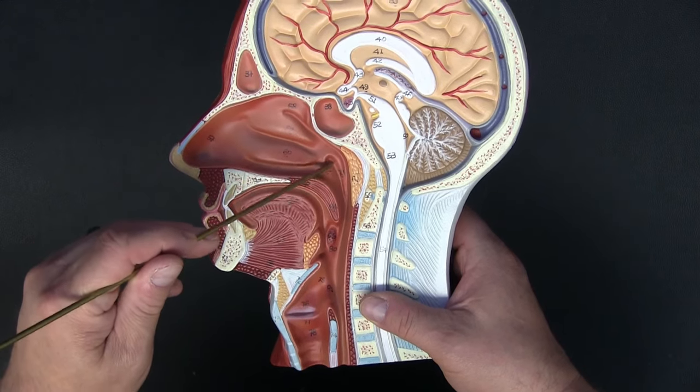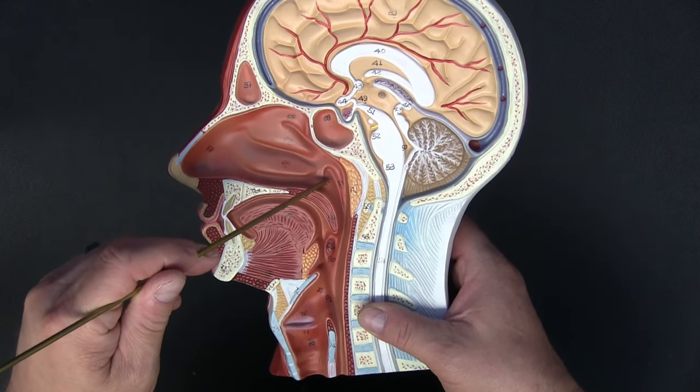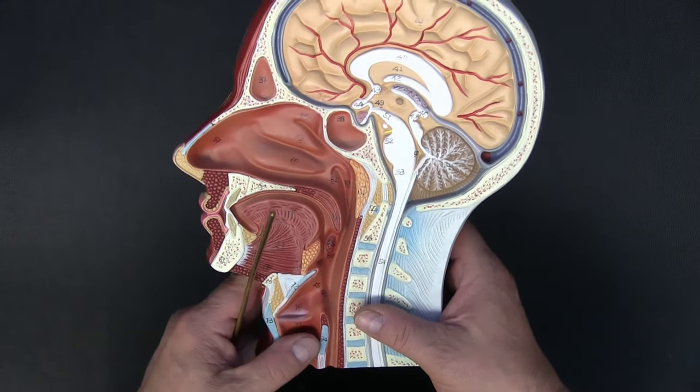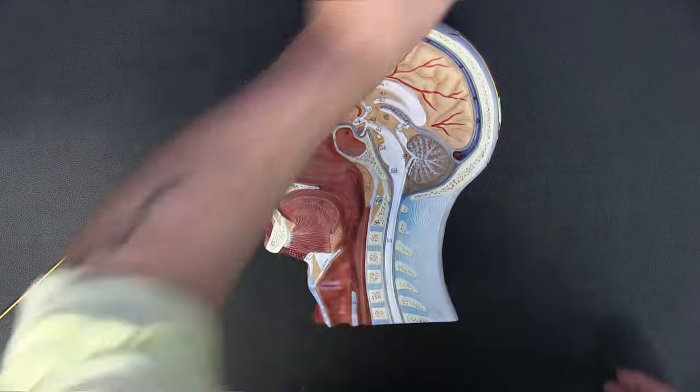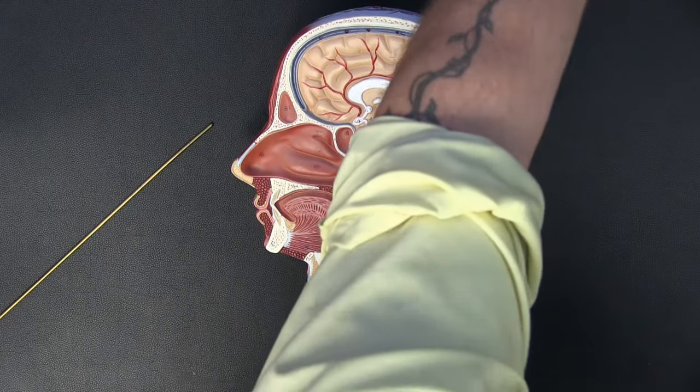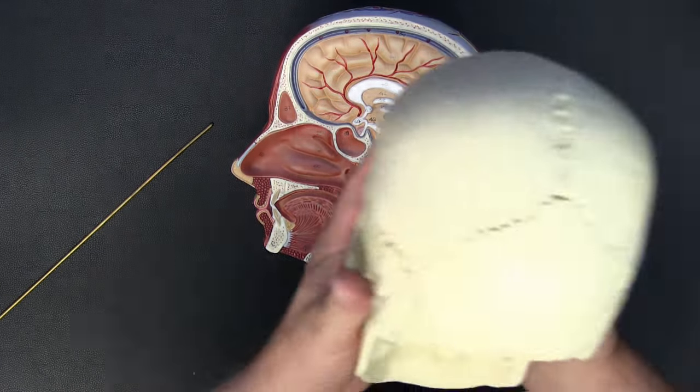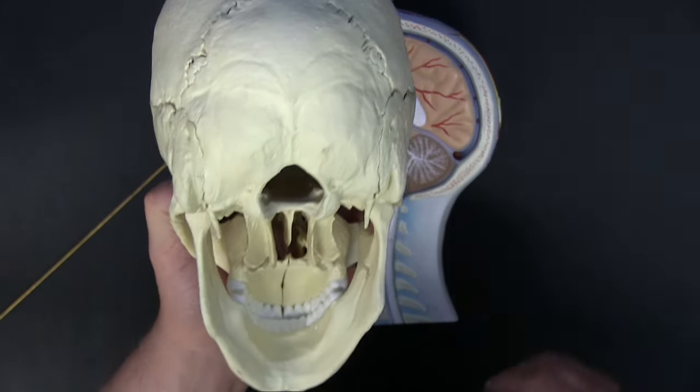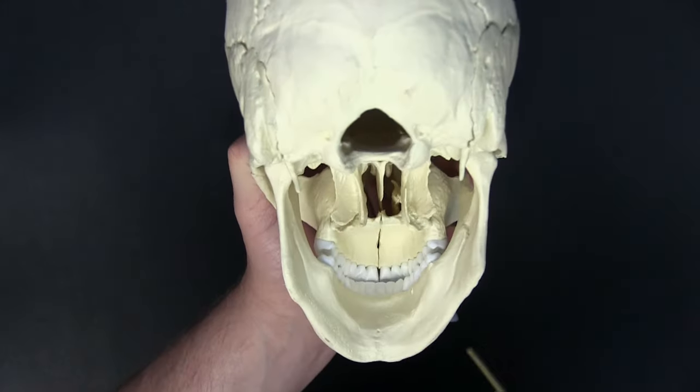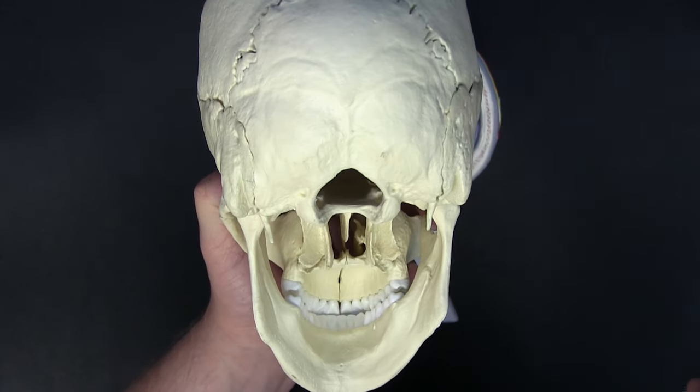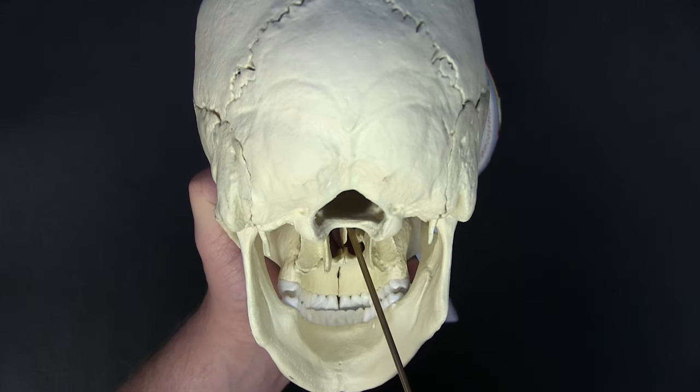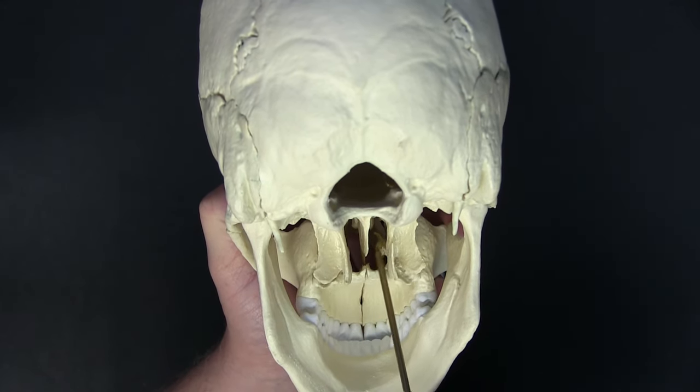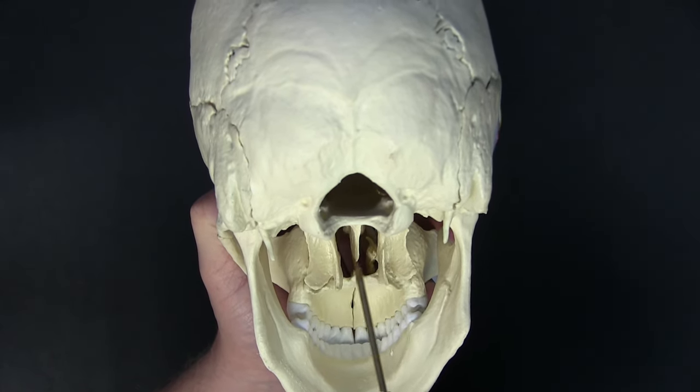The nasopharynx is where our middle ear is going to open up, and we have the auditory tube connecting the middle ear to our nasopharynx. One thing that's a little bit difficult to visualize is that the two nasal cavities enter a single nasopharynx. Looking from the posterior inferior side, we can see the nasal septum and the two nasal cavities on either side emptying into the nasopharynx.